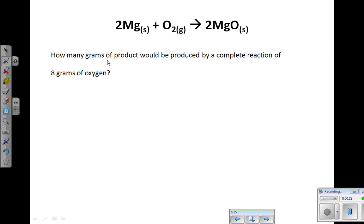In this particular problem, they're asking how many grams of product would be produced by a complete reaction of eight grams of oxygen. So we're going from grams to grams, which is really very functional. We can measure that in a lab. So our given is eight grams of oxygen, we are trying to find grams of product, which is magnesium oxide.